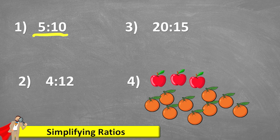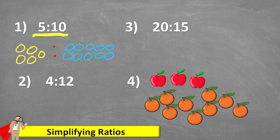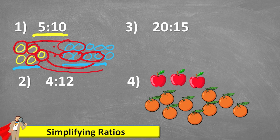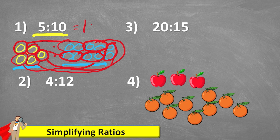If we look at this first example, we have 5 to 10, meaning that we have 5 of one thing to 10 of something else. Now this could be apples to oranges, cars to boats, absolutely anything. But essentially what it's saying is that for every 5, we have 10 of something else. But this might not be its simplified form. What I can actually do is say that for every 1, we have 2 of the other. We can check that works: 1 pairs to 2, 1 pairs to 2, 1 pairs to 2, and our last one also pairs to 2. So our simplified ratio would be 1 to 2.